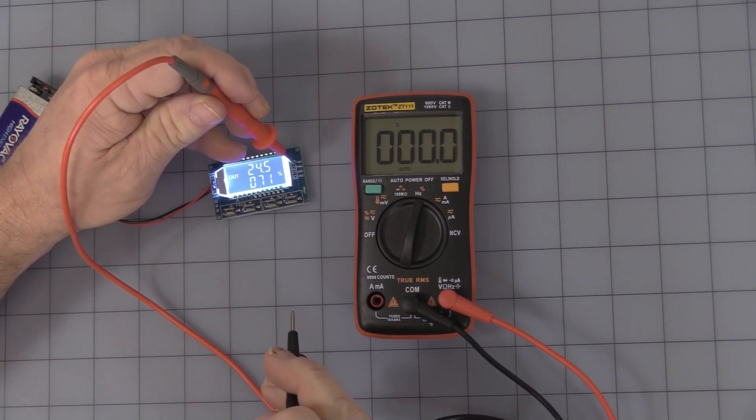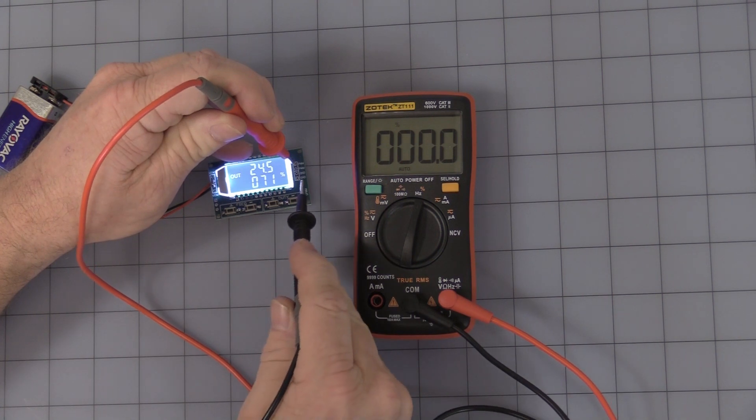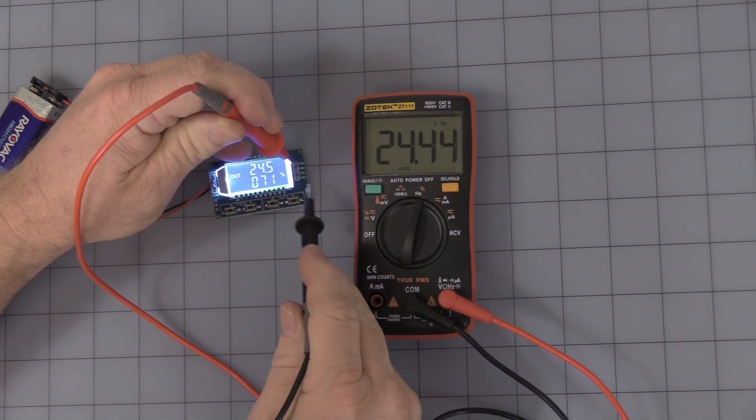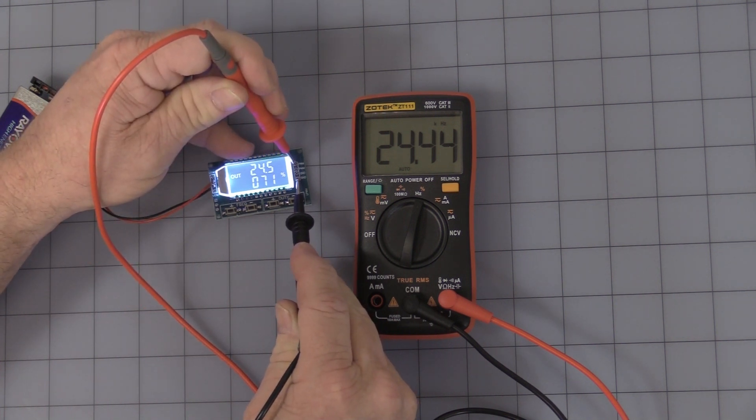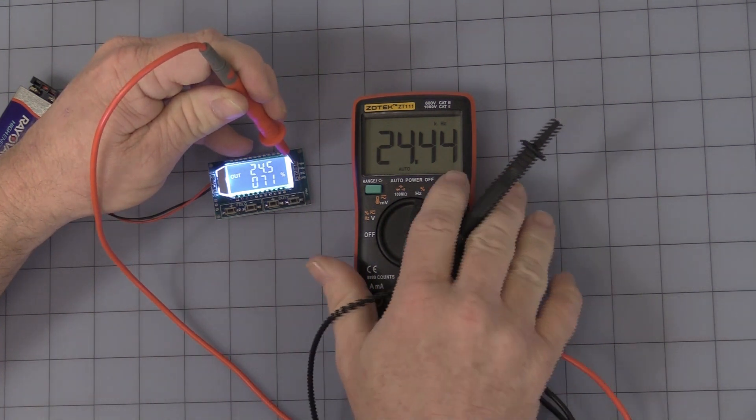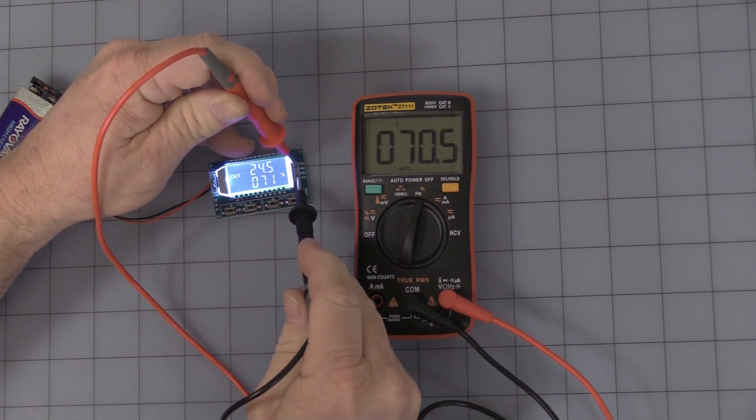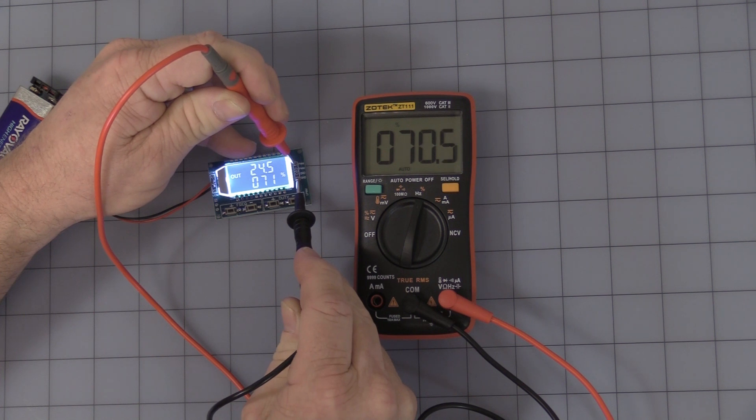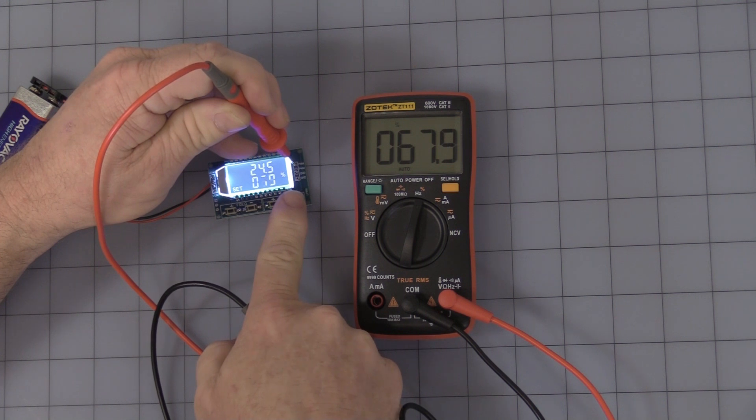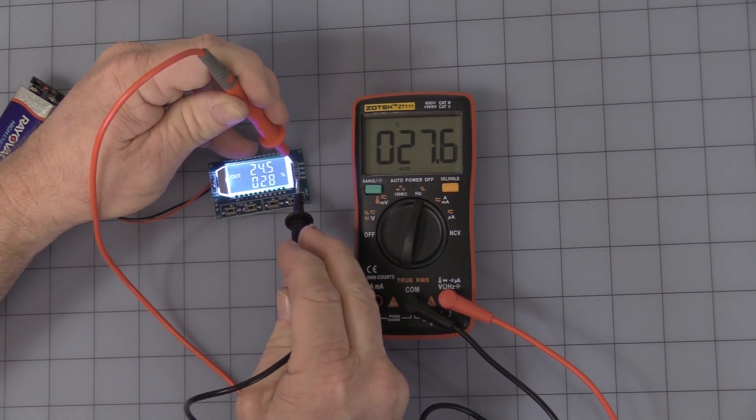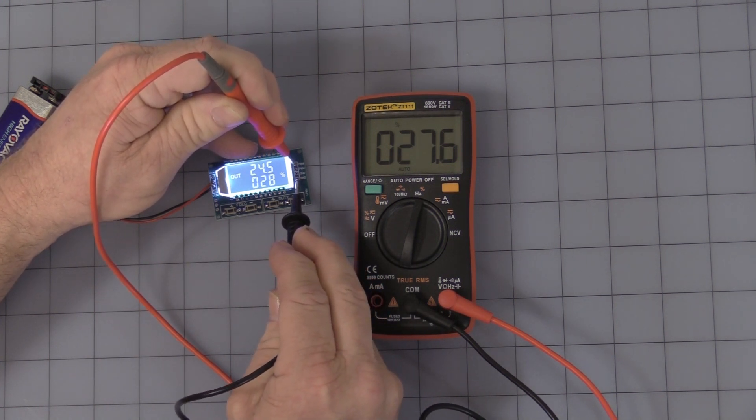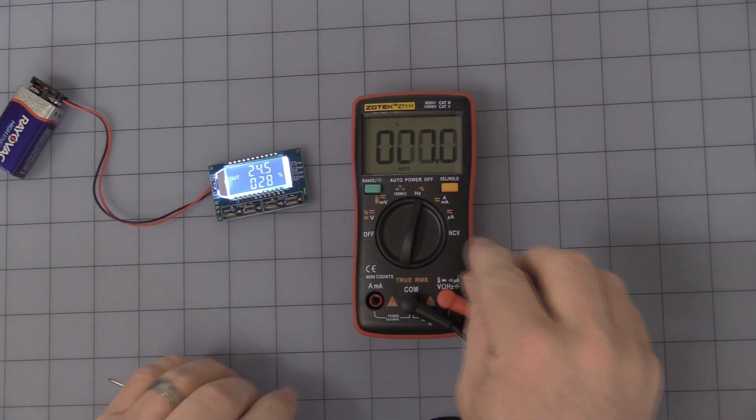But if you lower the frequency down to just below 25 kilohertz. Just to show you frequency. See 24.44, 24.5. Switch back over to duty cycle. And 71 versus 70.5. And just to lower the duty cycle just to show you. 27.6 versus 28. That is this section.